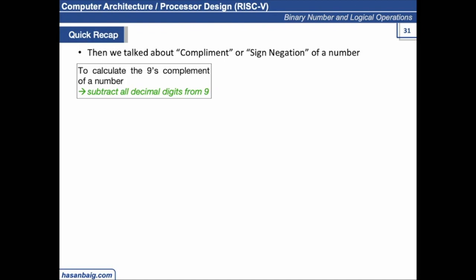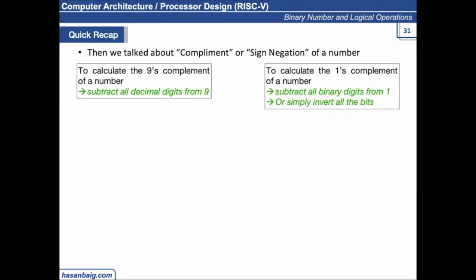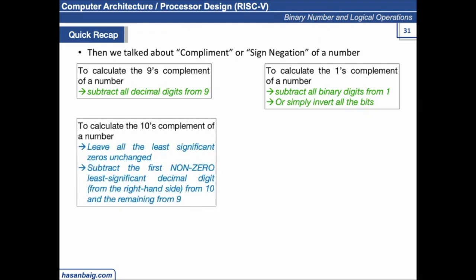To calculate the 9's complement, all you need to do is subtract all decimal digits from 9. To calculate the 10's complement: leave all the least significant zeros unchanged, subtract the first non-zero least significant digit from 10, and subtract the remaining digits from 9. For example, for the 10's complement of 012398, the 8 is subtracted from 10 and all other digits from 9.